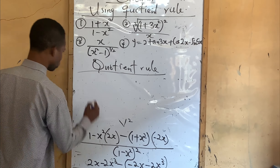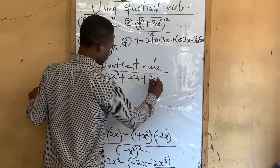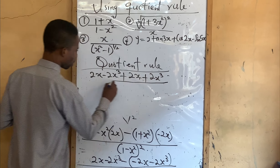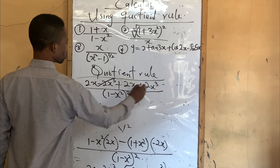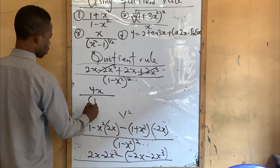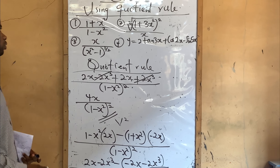So collecting terms: 2x minus 2x cubed, minus (minus 2x), that is plus 2x, and minus (minus 2x cubed), that is plus 2x cubed. So 2x plus 2x gives 4x, and minus 2x cubed plus 2x cubed cancels. The result is 4x all over (1 minus x squared) squared. That is the answer for number 1.